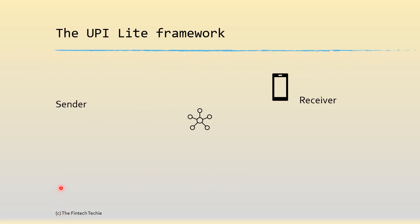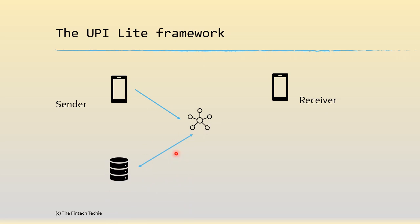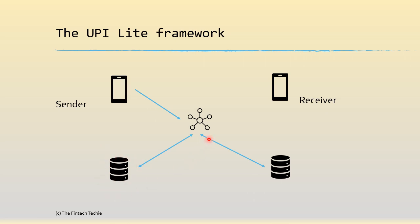Before we go to UPI Lite, let's understand how UPI currently works. So if you have a sender using a payment service application provider's app to send money to a receiver, the request goes from the app to the NPCI network or the switch, which in turn sends a request for debit to the sender's database, and on successful approval it sends a request for credit to the receiver's core banking database, and a notification comes to the receiver that they have received the funds. For more details you can refer to the previous video where this has been presented in greater detail.